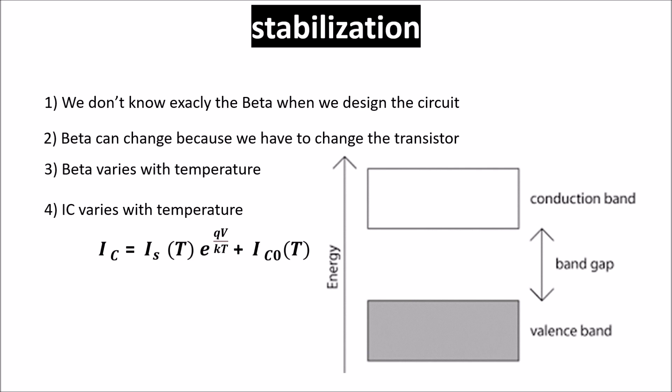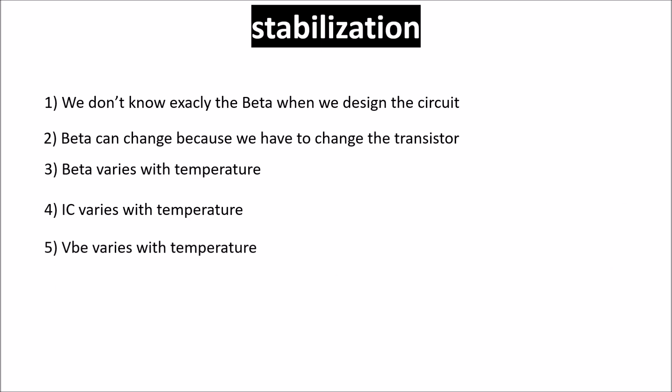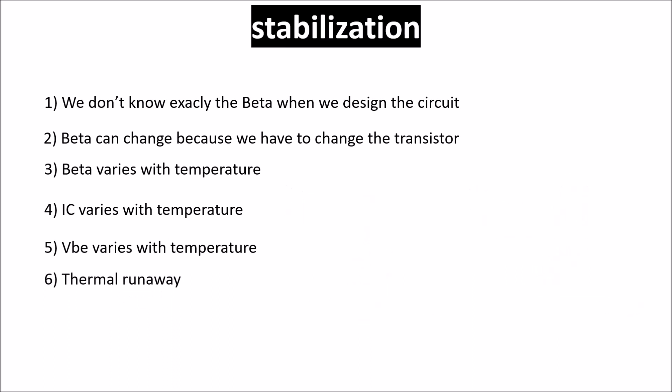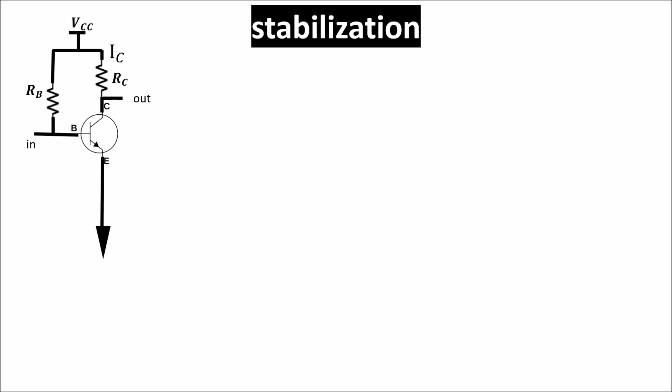So minority carrier concentration increases, thus increasing reverse and leakage current. If IC increases, we need less VBE for the same amount of IC, so VBE decreases. So an increase in temperature produces an increase in minority carrier current but a negative change in VBE. So both effects lead to an increase in collector current with temperature. The last issue is called thermal runaway. If collector current increases, temperature increases as well, and temperature increasing makes collector current increasing more. So there is a positive feedback called thermal runaway. So we need a way to stabilize collector current.